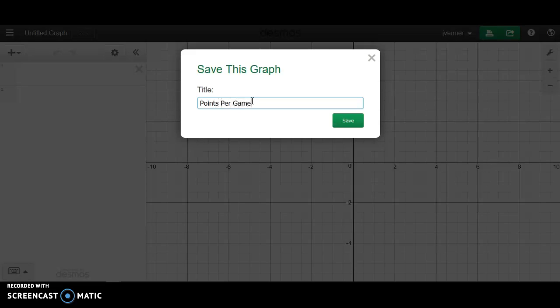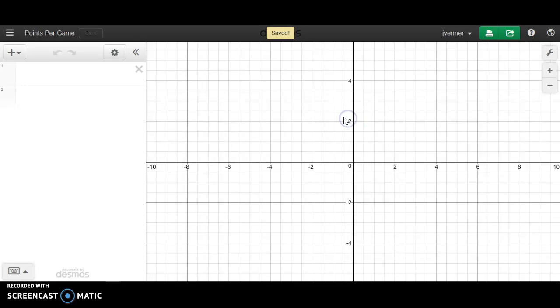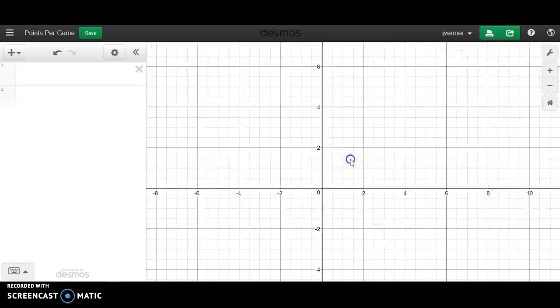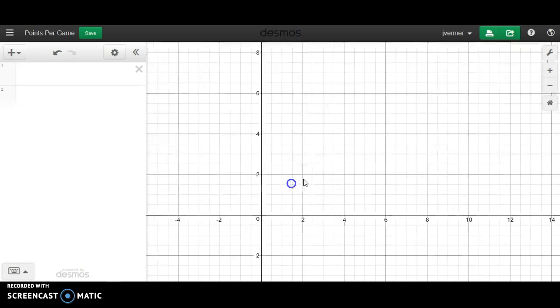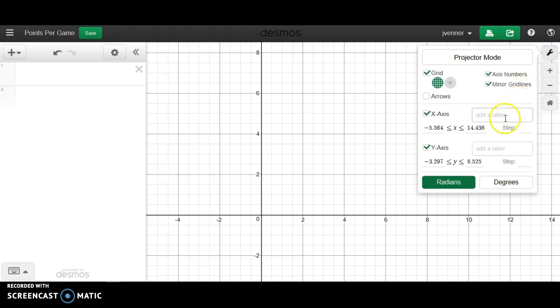Points per game. And we are also going to, you can move this around simply by clicking on and holding it down, we're going to go ahead and label our axis.